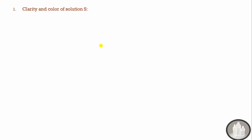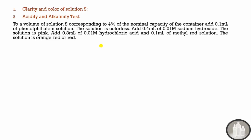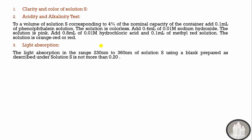For the clarity and color test, Solution S should be clear and is compared with the IP reference standard solution; it is considered colorless or of a specific color when it matches the standard. In the acidity and alkalinity test, 40% of the nominal volume is taken; if colorless after adding phenolphthalein it is titrated with base, if pink it is titrated with acid, and it should not consume more than 0.4 ml of NaOH or 0.8 ml of HCl. For light absorption, the solution is scanned from 230 nm to 360 nm using blank as reference, and absorbance should not exceed 0.20.